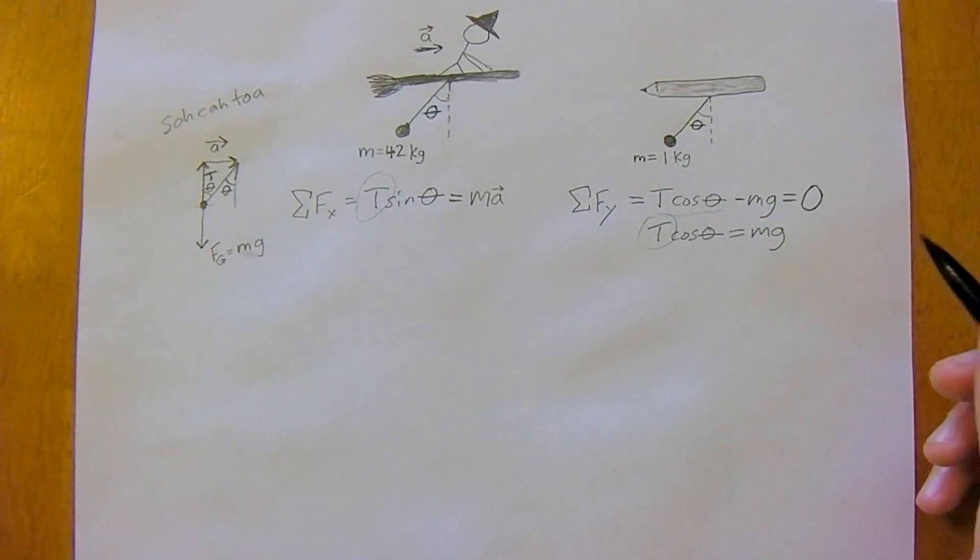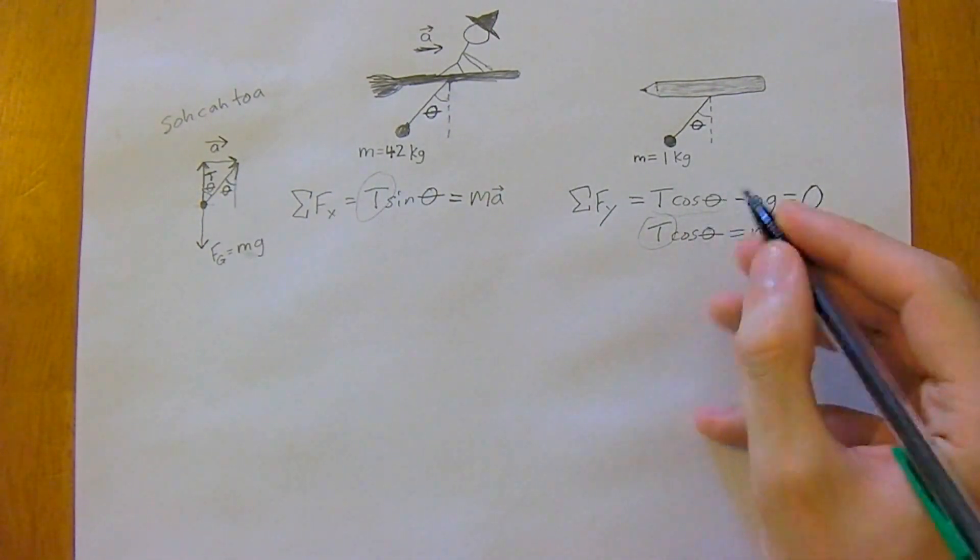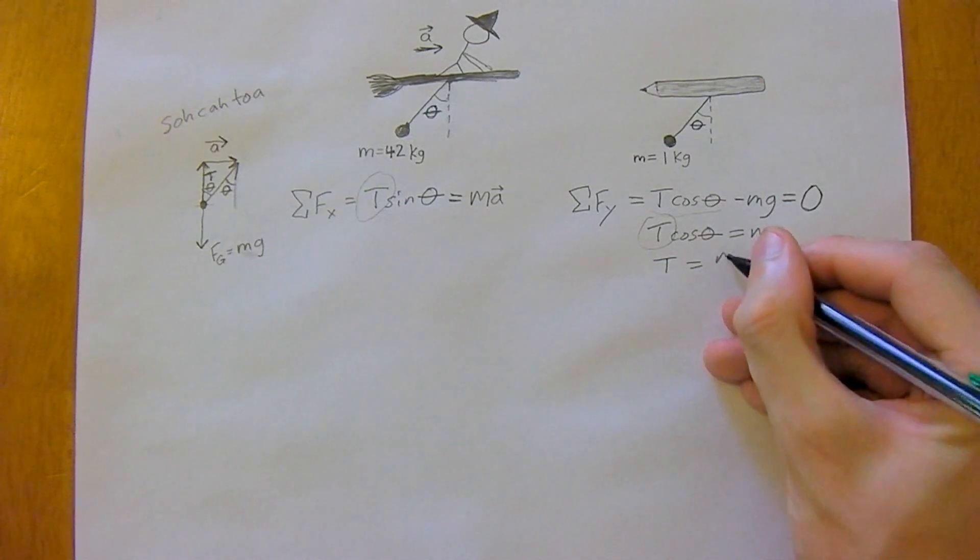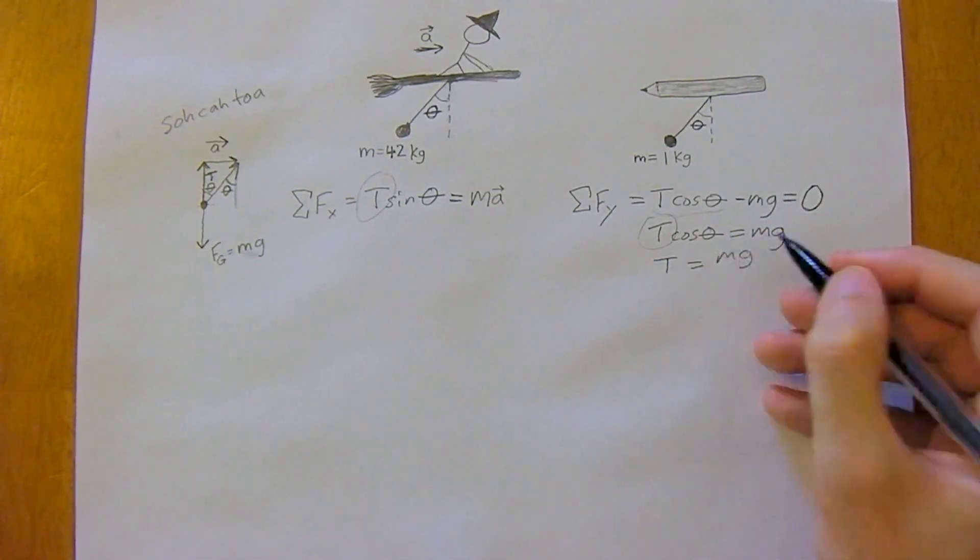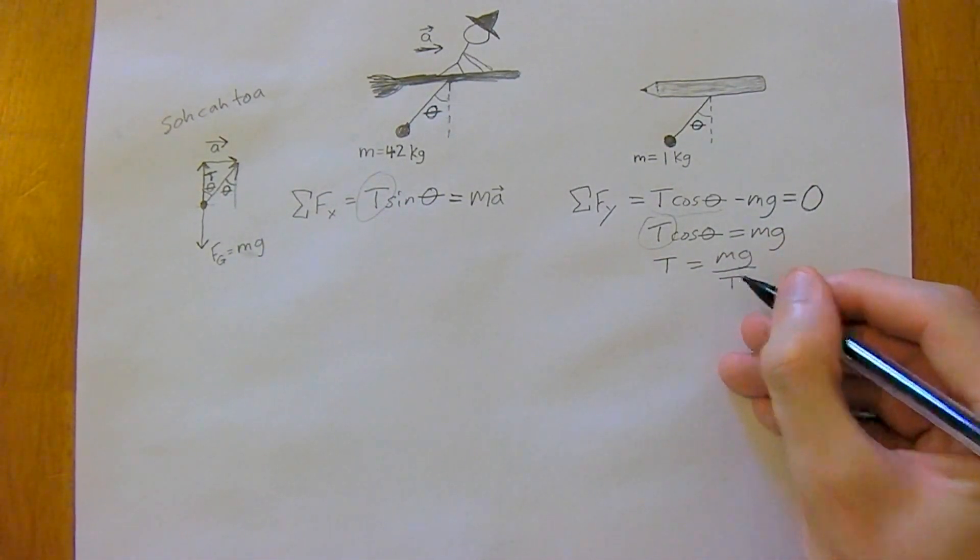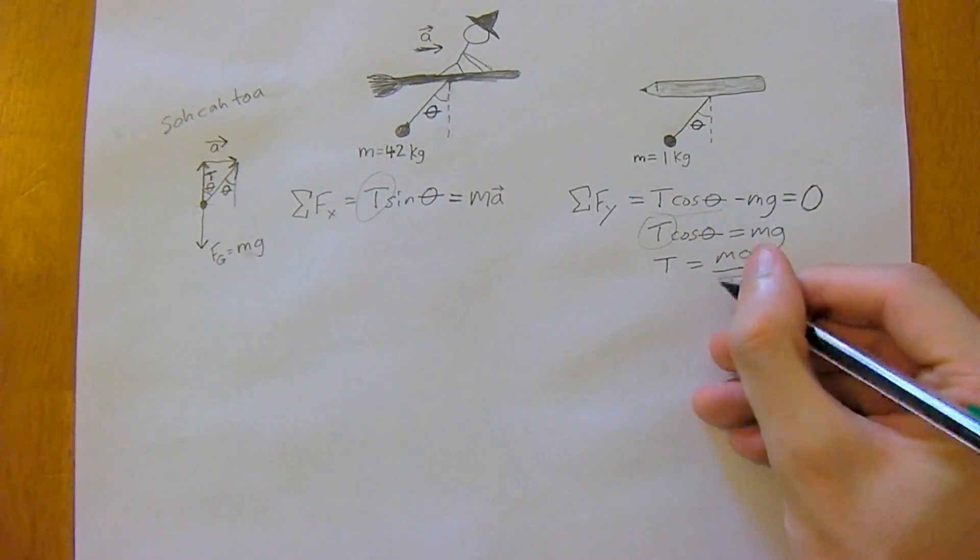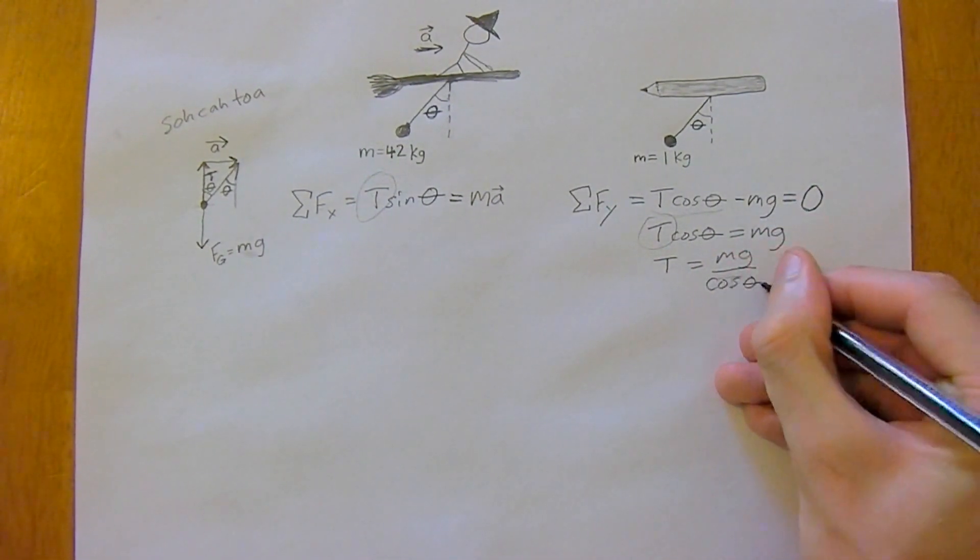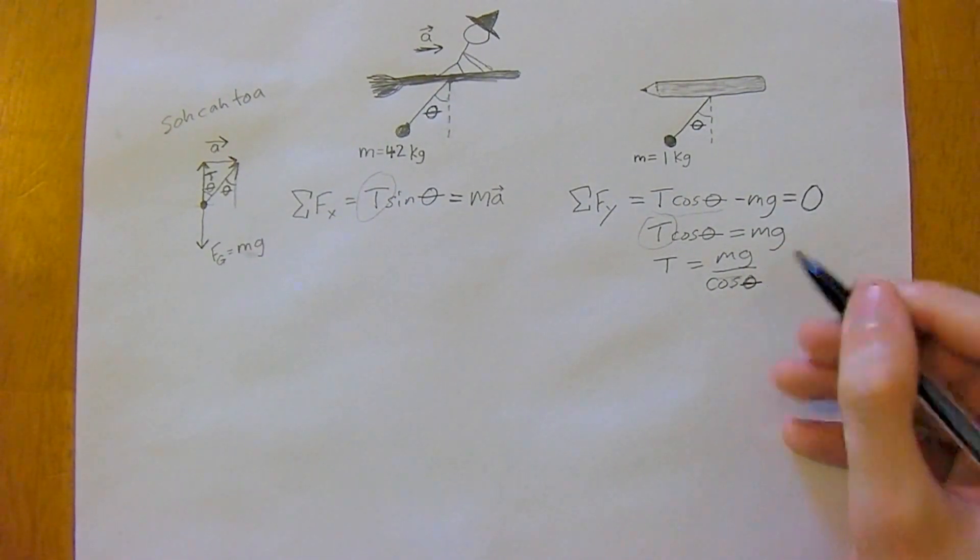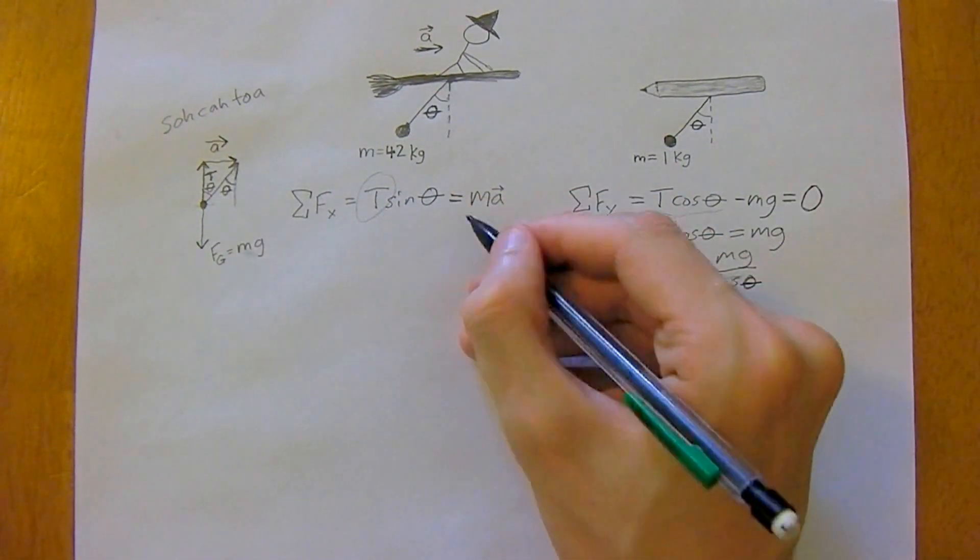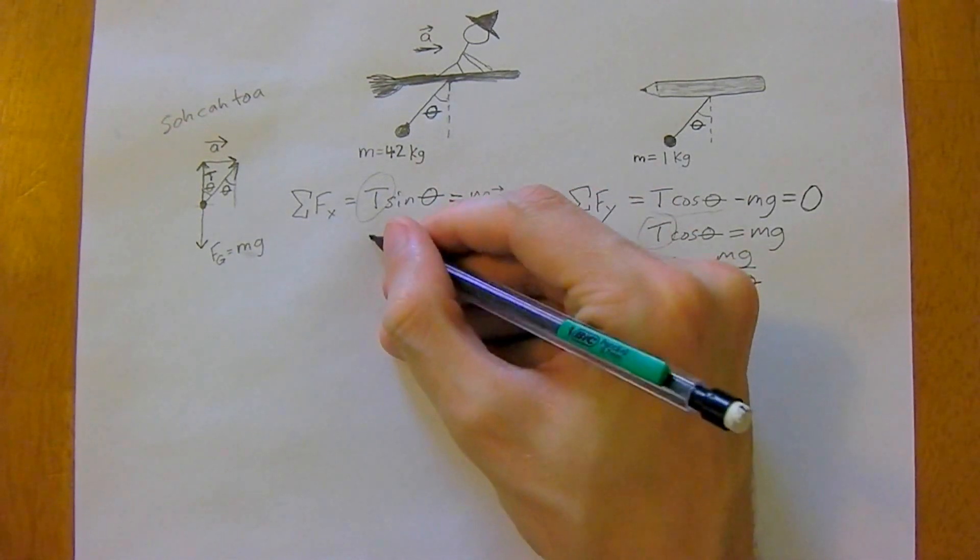We're going to set tensions equal to each other. In this case, tension is going to be mg—we're going to divide both sides by cosine theta, divide both sides by cosine.